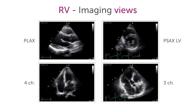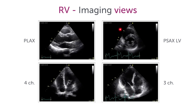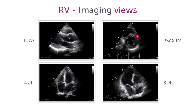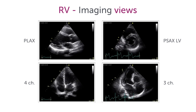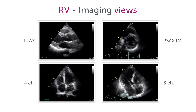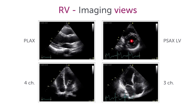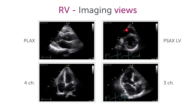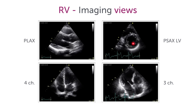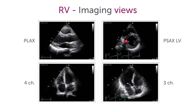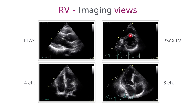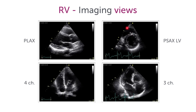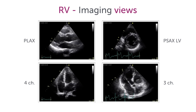We can look at it in a short axis view. This view is more important because we can look at the relationship to the left ventricle, look at the position of the septum, and at radial motion.